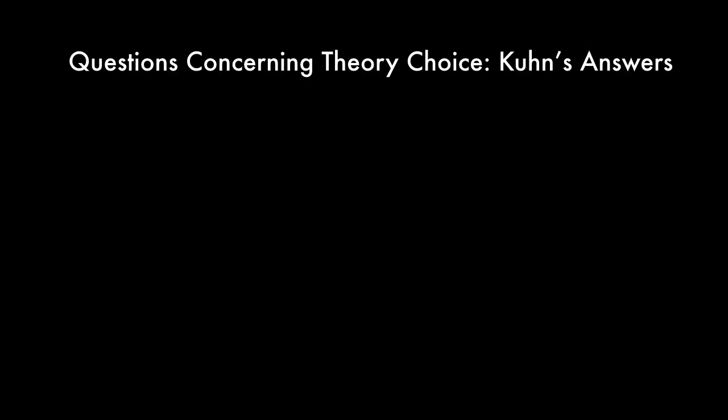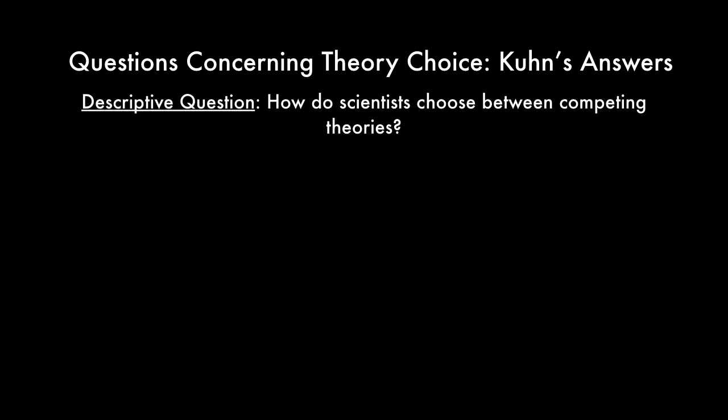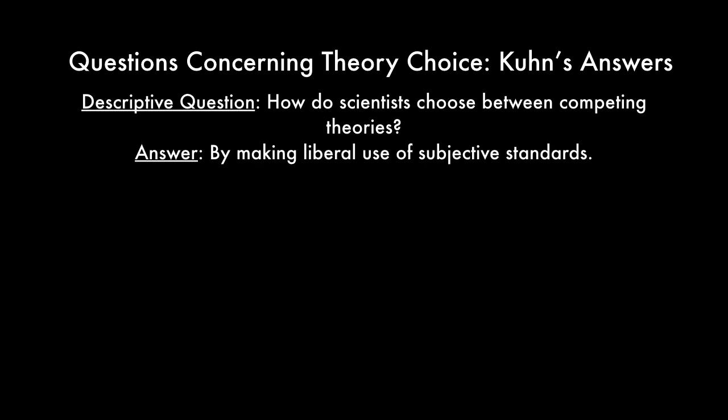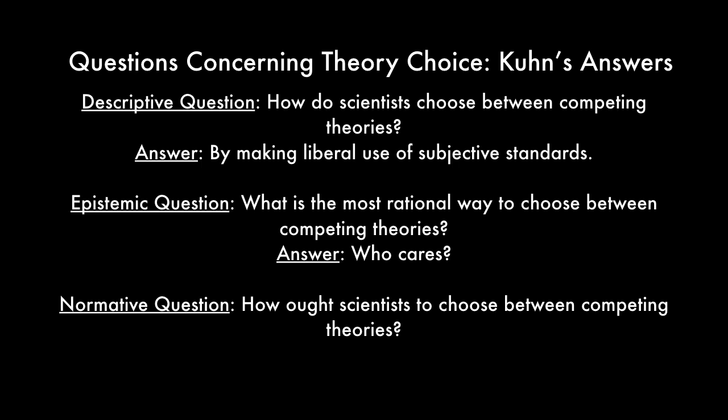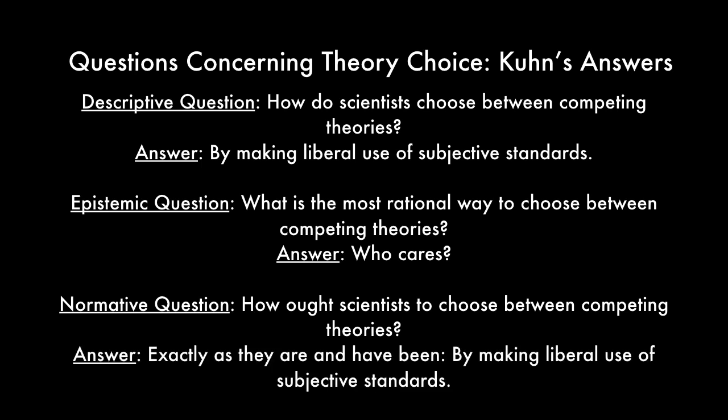We can now see what Kuhn's answers would be to our three questions concerning theory choice. The descriptive question — how do scientists choose between competing theories? Kuhn says: by making liberal use of subjective standards. The epistemic question — what is the most rational way to choose between competing theories? Kuhn's answer: who cares? The normative question — how ought scientists to choose between competing theories? Kuhn's answer: exactly as they are and have been, by making liberal use of subjective standards.